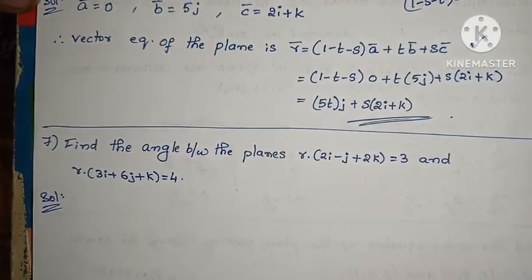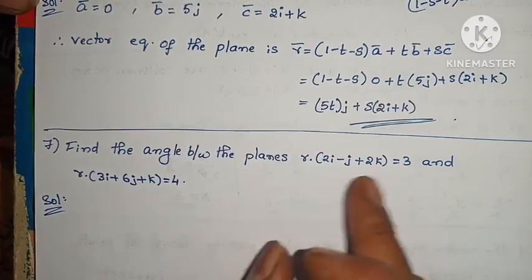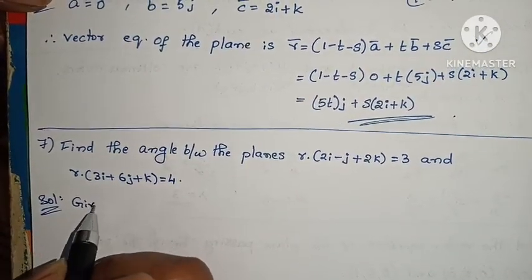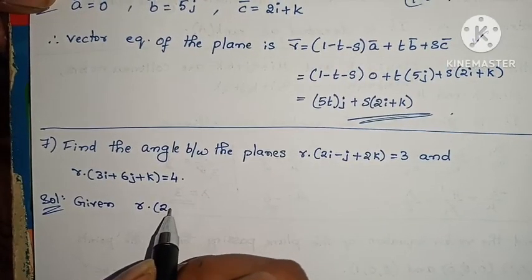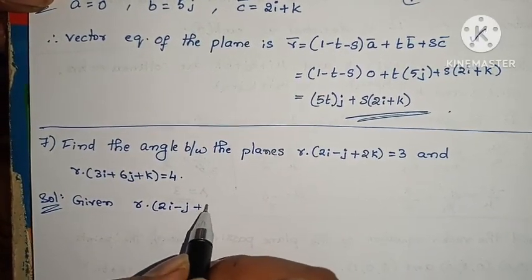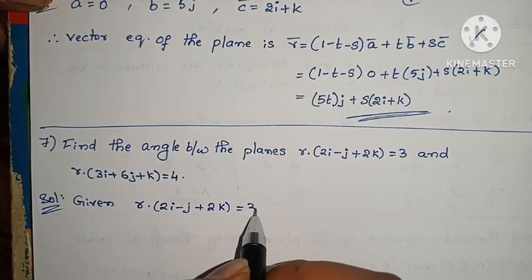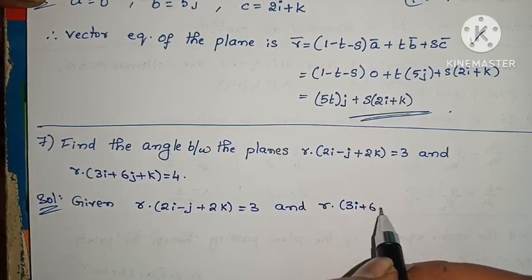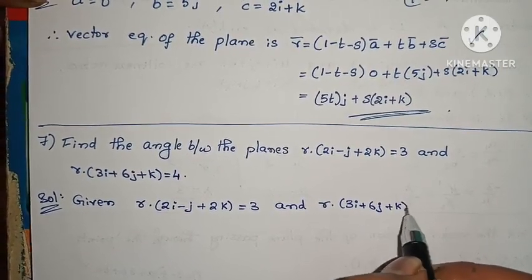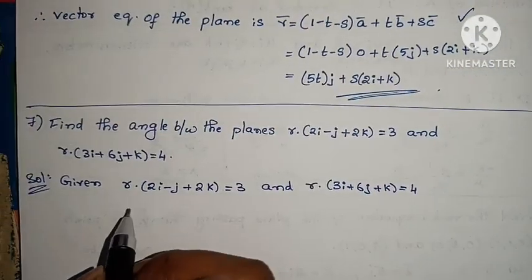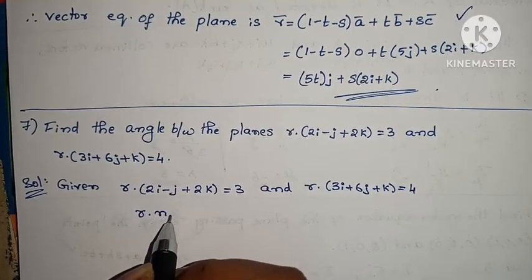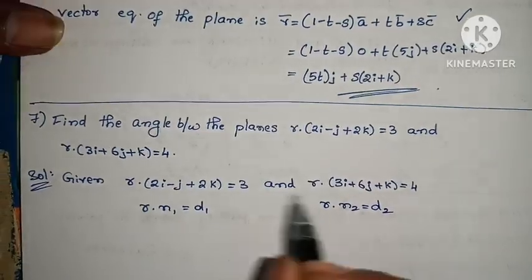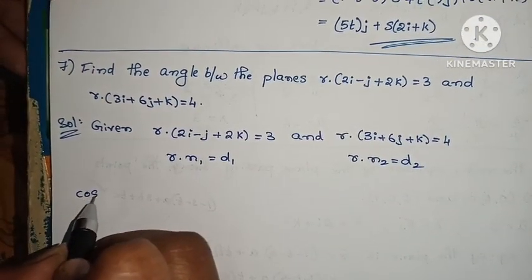Find the angle between the two planes: r̄·(2i - j + 2k) = 3 and r̄·(3i + 6j + k) = 4. Using the model: r̄·n₁ = d₁ and r̄·n₂ = d₂. The formula for the angle between planes is: cos θ = |n₁·n₂| / (|n₁|·|n₂|).